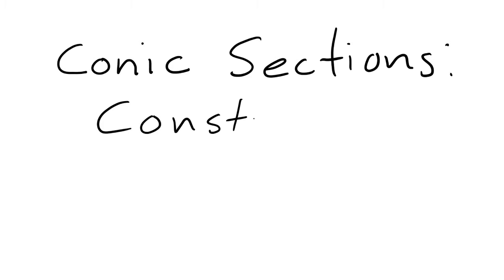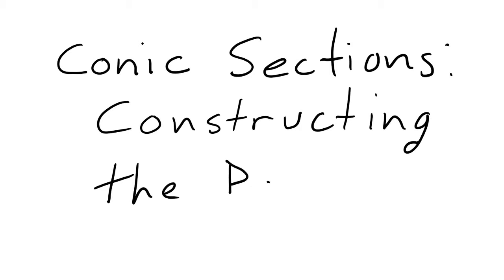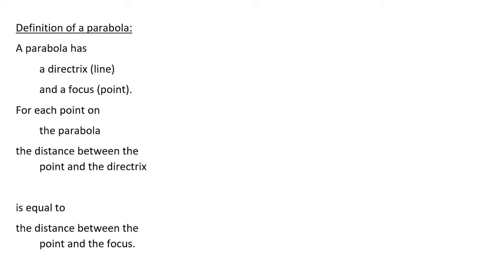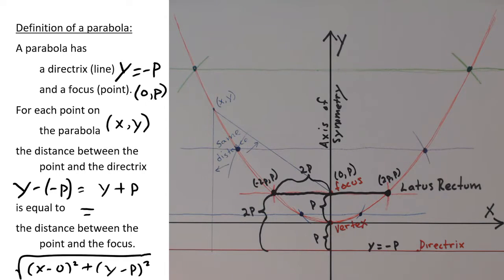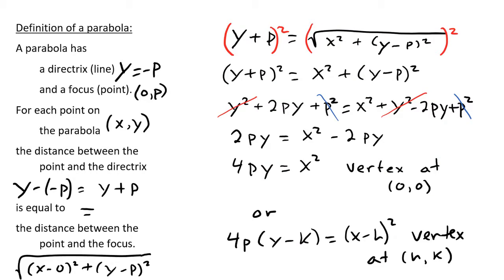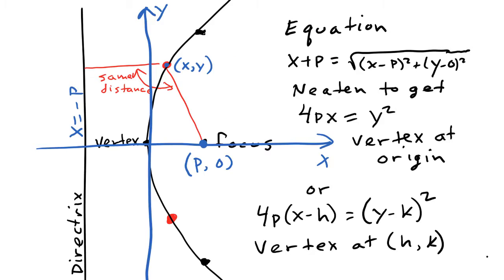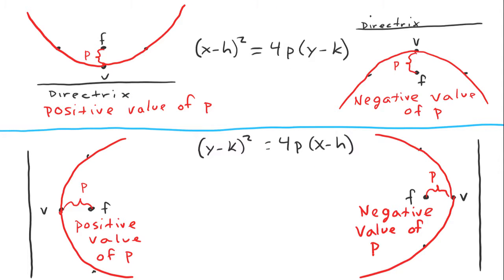Conic Sections: Constructing the Parabola. In this video, we start with a verbal description of what a parabola is. We use that description to construct a parabola, and then, based on that, we derive the equation of a parabola. Finally, we consider the effect of using a vertical line for the directrix rather than a horizontal line. In the next video, we will use these equations to graph example parabolas.